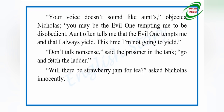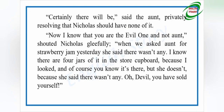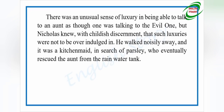'Don't talk nonsense — go and fetch the ladder,' said the prisoner in the tank. 'Will there be strawberry jam for tea?' asked Nicholas innocently. 'Certainly there will be,' said the aunt, privately resolving Nicholas should have none of it. 'Now I know you are the evil one and not aunt!' shouted Nicholas gleefully. 'When we asked aunt for strawberry jam yesterday she said there wasn't any — I know there are four jars of it in the store cupboard because I looked. You've sold yourself!' Nicholas knew such luxuries were not to be over-indulged in. He walked noisily away, and it was a kitchen maid searching for parsley who eventually rescued the aunt from the rainwater tank.